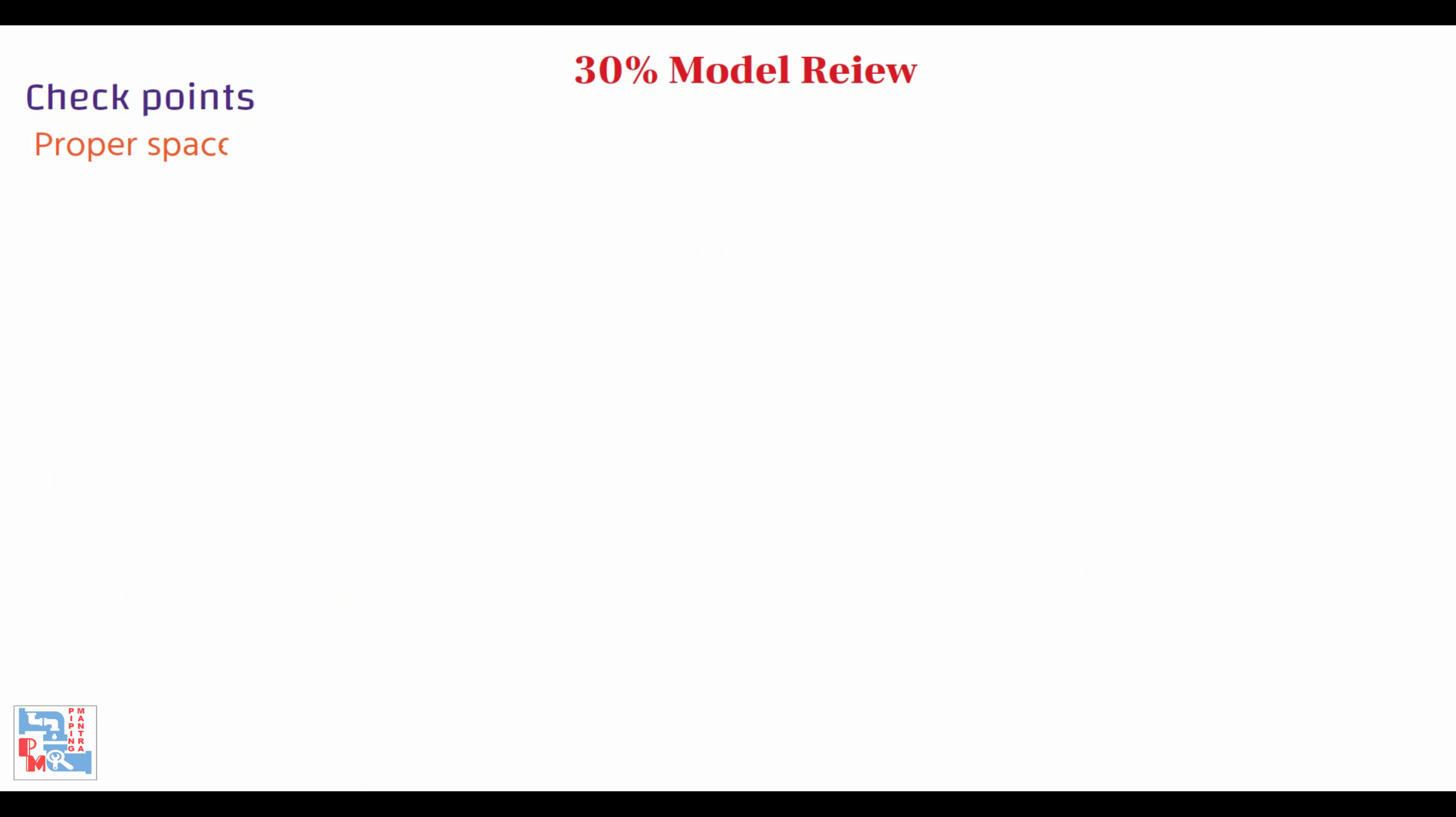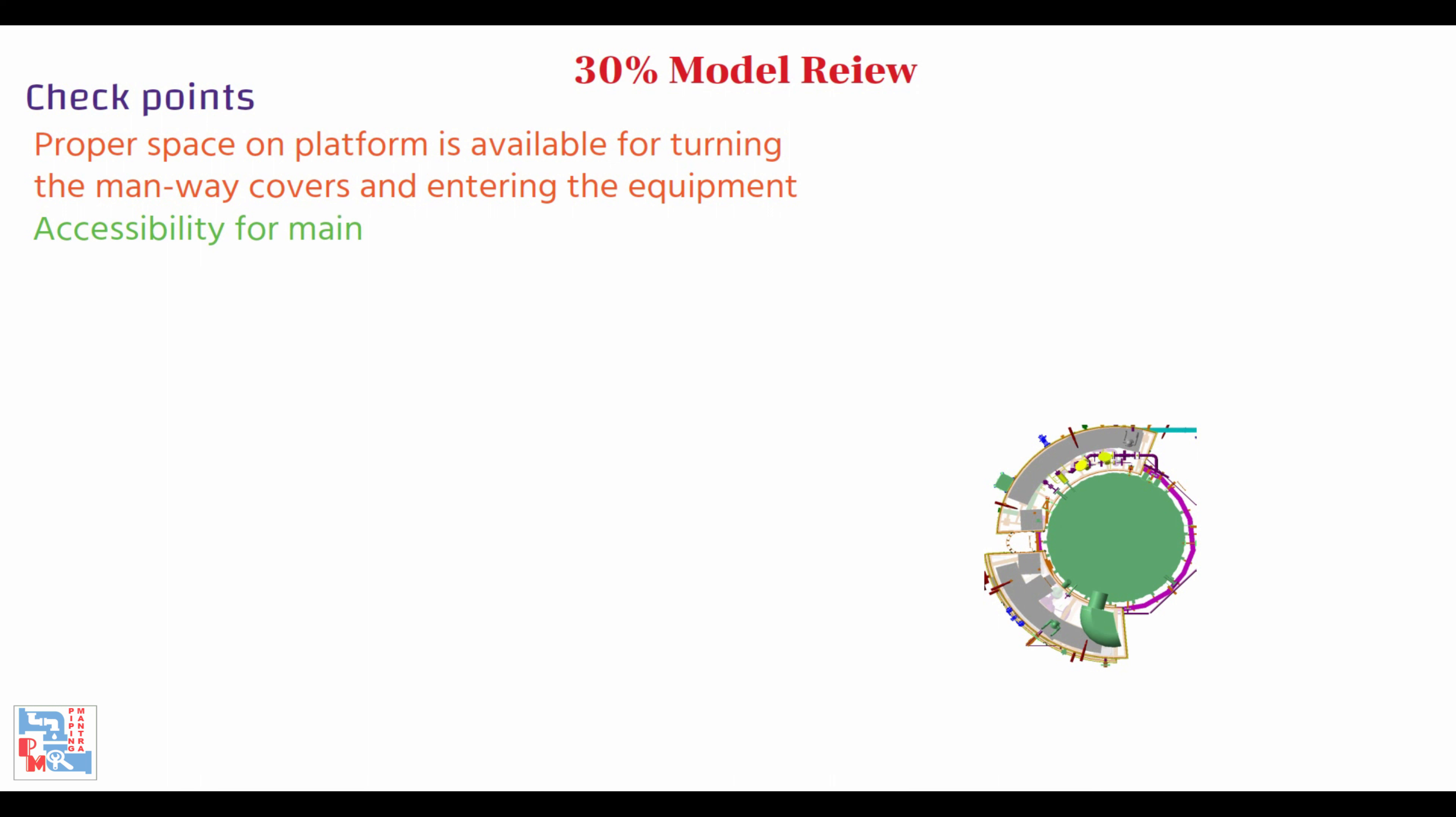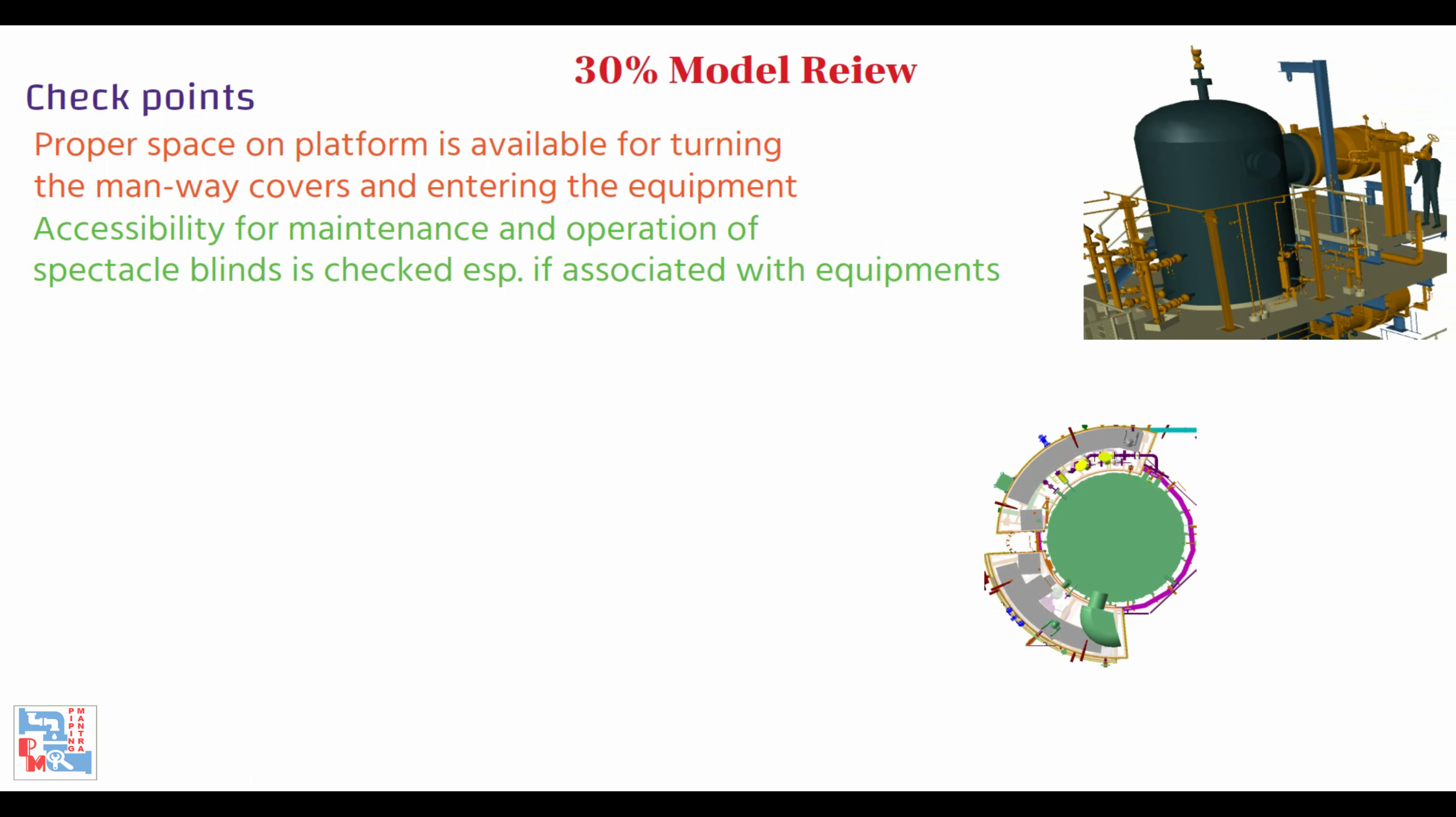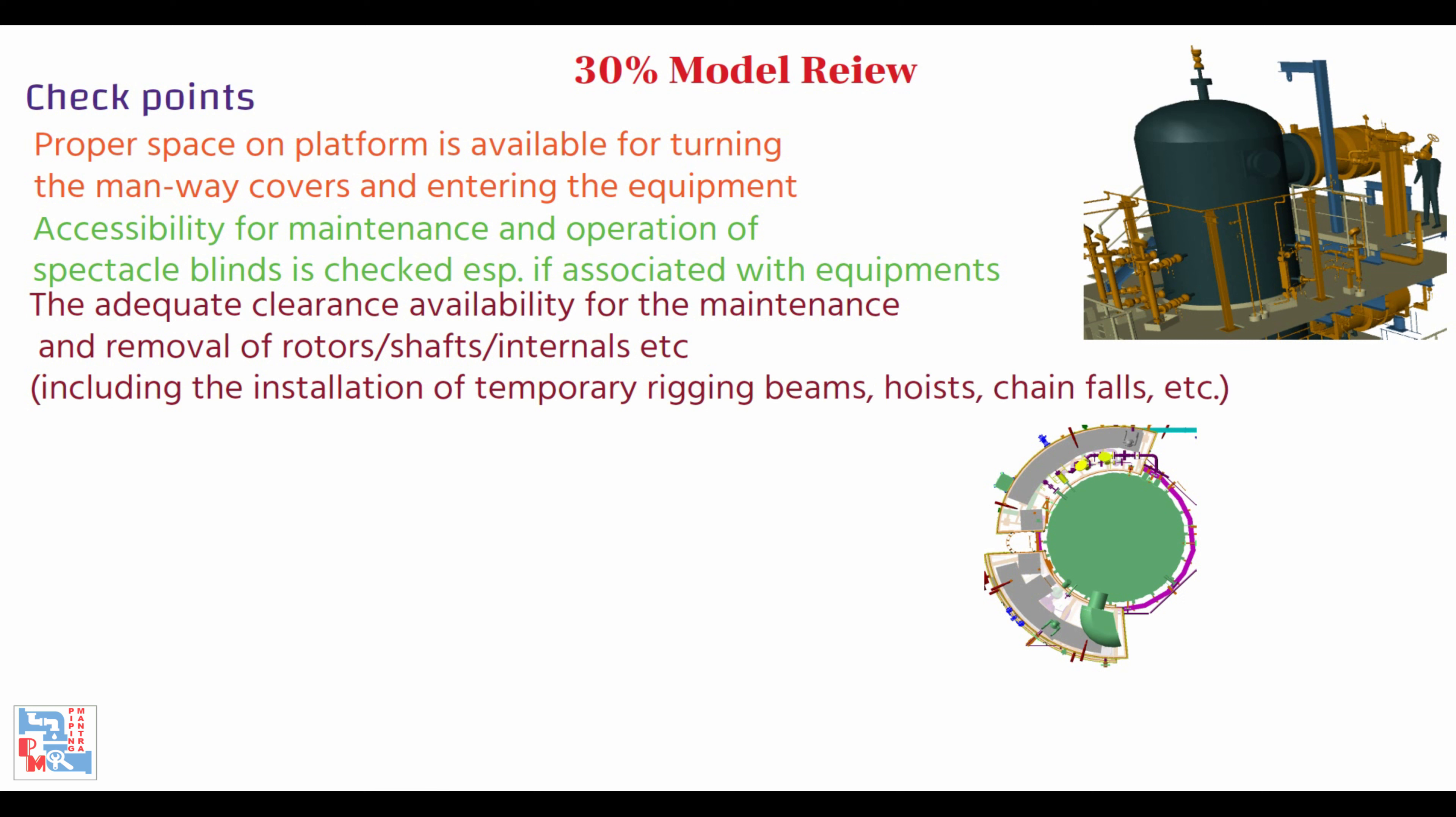Proper space on the platform is available for turning the manway covers and entering the equipment. Accessibility of maintenance and operations of spectacle blind is checked, especially if associated with equipment. The adequate clearance availability for the maintenance and removal of rotors, shafts, internals, etc., including the installation of temporary rigging beams, hoists, chain falls, etc., is checked.